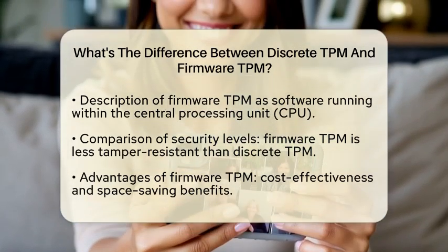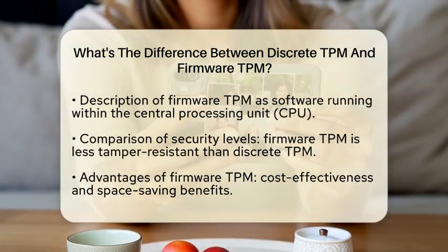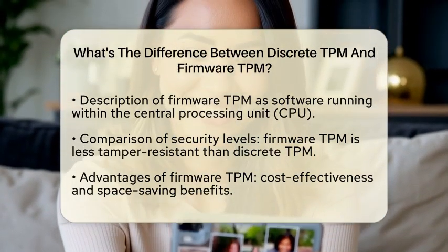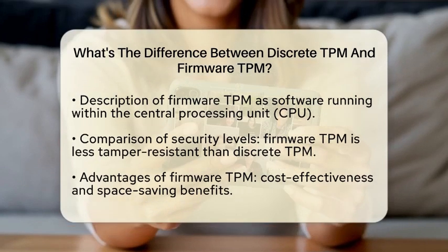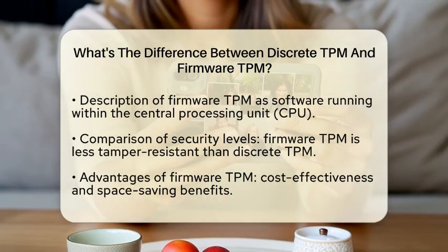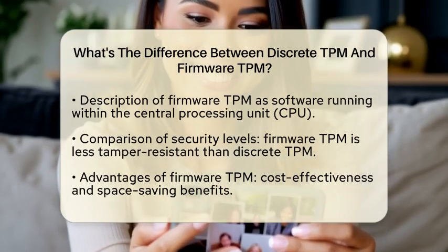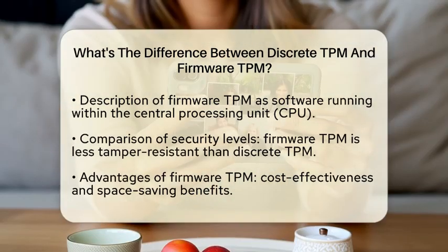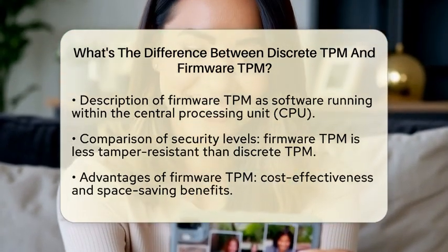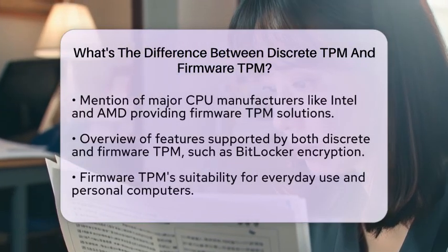On the other hand, firmware trusted platform module is not a separate chip. Instead, it runs as protected software within the main central processing unit. This means that the TPM functions are executed inside a secure area of the processor. While firmware TPM offers good security for everyday use, it is less tamper-resistant than discrete TPM because it relies on the security of the central processing unit and its firmware.